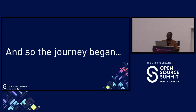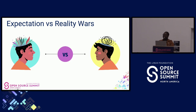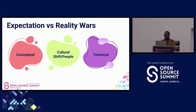So the journey to adopting OpenTelemetry began. With this journey came some expectations about how things would go, and then the reality began to unfold. I grouped these expectations and realities into three categories: first, the conceptual aspect around understanding and knowledge; second, the cultural shift around getting your team on board; and third, the technical aspect around actually integrating it into our systems and services.